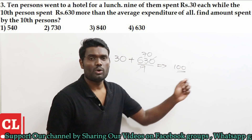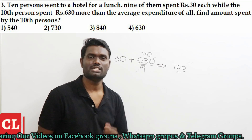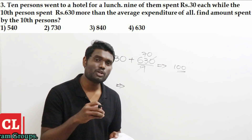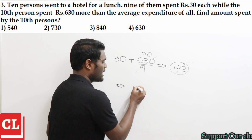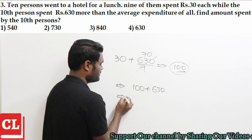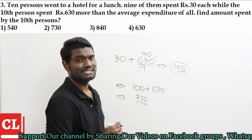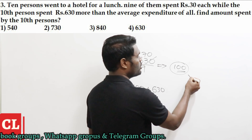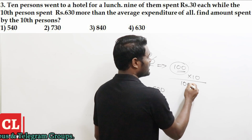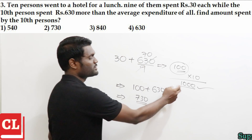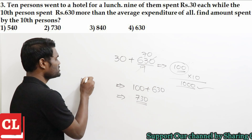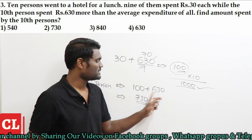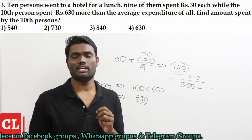If they ask for total expenditure: 100 × 10 = 1000 rupees. But the question asks for the amount spent by the 10th person. The 10th person spent 630 rupees more than the average of 100, so 100 plus 630 = 730 rupees is the amount spent by the 10th person.